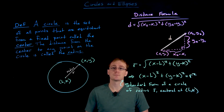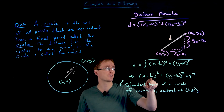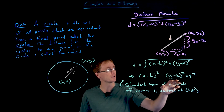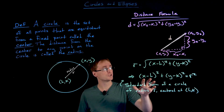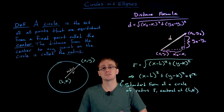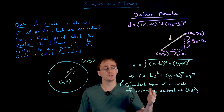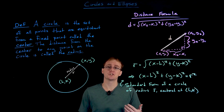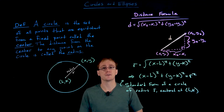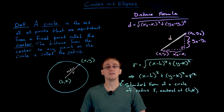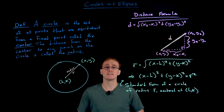If the center is at the origin (0, 0), the equation simplifies to x² + y² = r². By shifting our circle up, down, left, or right, we're using the same transformation concepts as for functions: replacing x with (x − h) shifts horizontally h units, and replacing y with (y − k) shifts vertically k units. This will also apply to other conic sections we discuss.